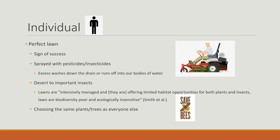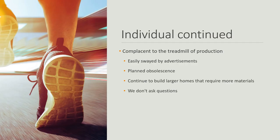Individuals also contribute to the problems. One example is the pursuit of a perfect lawn — to many it is a sign of success, but lawns are sprayed with pesticides and insecticides, which end up washing into our bodies of water. Lawns are also a desert to important insects, offering limited habitat for both plants and insects. They are biodiversity poor and ecologically insensitive. We also tend to choose the same plants and trees as everyone else on our street. We are complacent to the treadmill of production, easily swayed by advertisements. We allow planned obsolescence. We continue to build larger homes and don't ask questions about where our products come from, how much waste is produced, or where our waste goes.